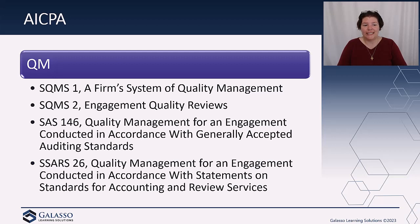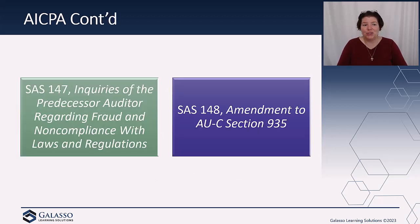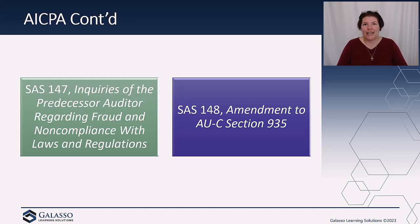The related SAS and SARS address how you use your quality management system at the engagement level — SAS 146 and SARS-26 cover that. They also issued SAS 147, which is related to NOCLAR and was needed to make the ethics standards operable. It does require that the subsequent auditor talk to the predecessor auditor about fraud and non-compliance.